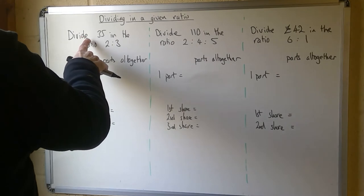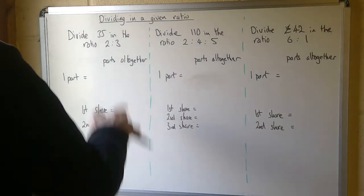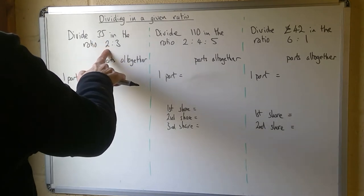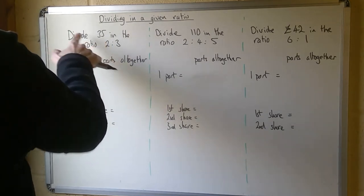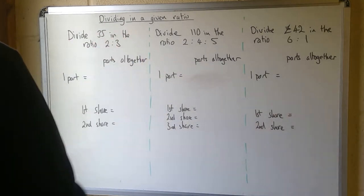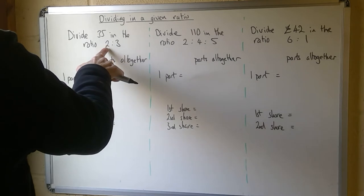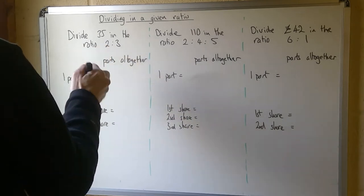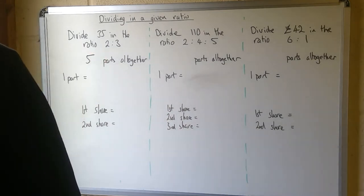So number one, divide 35 in the ratio 2 to 3. That means when I share this 35, for every two on this side there'll be three on that side. So I could count two for there and three for there and keep counting like that, but if I look at the whole picture, what I've got is two shares here and three shares there, so that's five parts altogether. I'm going to be using the word 'parts' quite a bit.